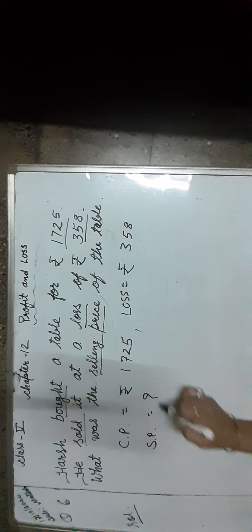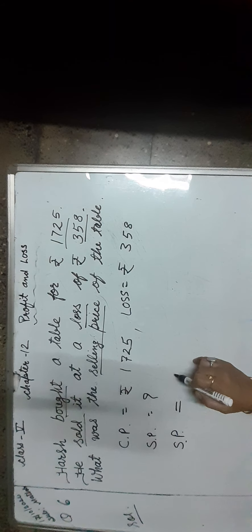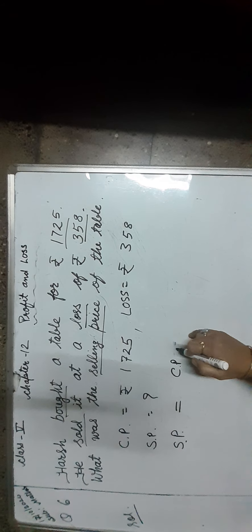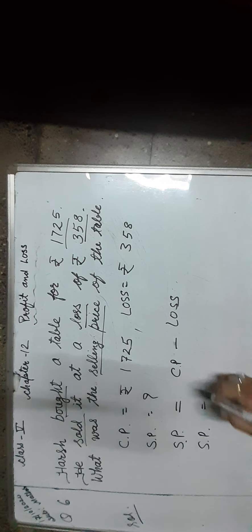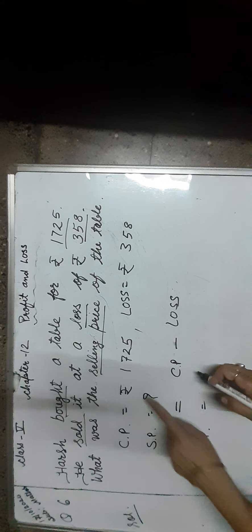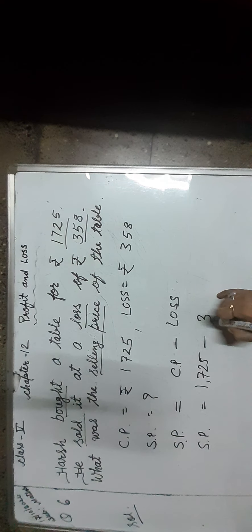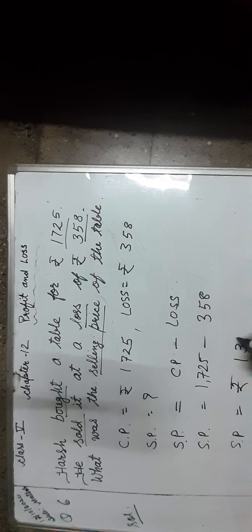Find out the selling price, that means SP. As we know, SP is equal to cost price minus loss. So SP is equal to Rs. 1,725 minus 358, which is equal to Rs. 1,367.